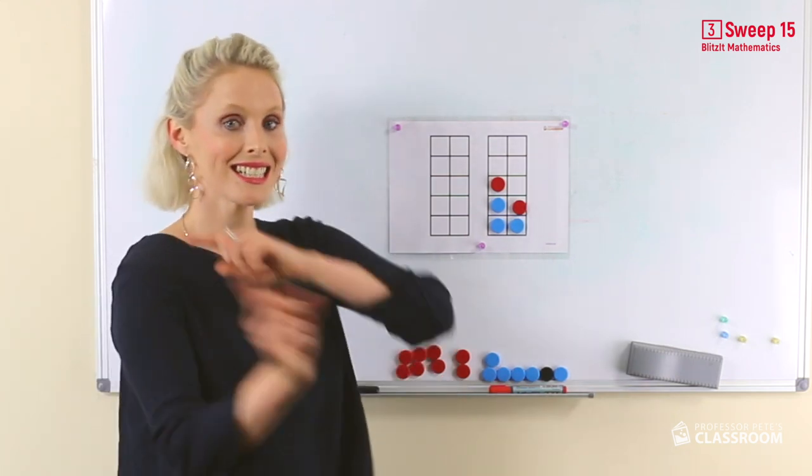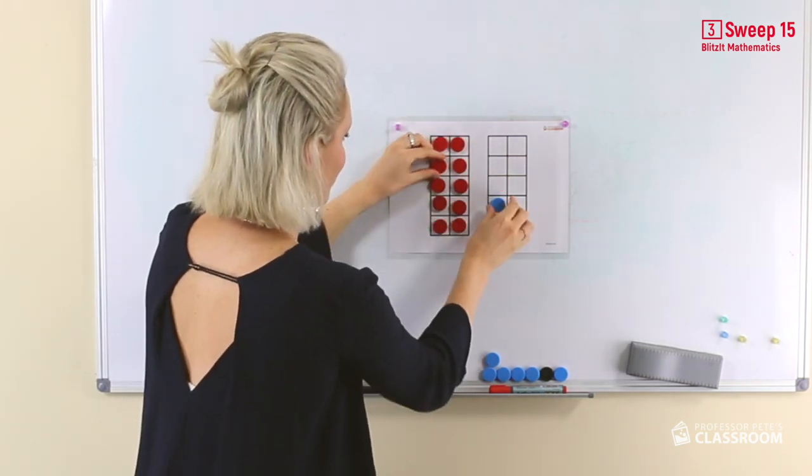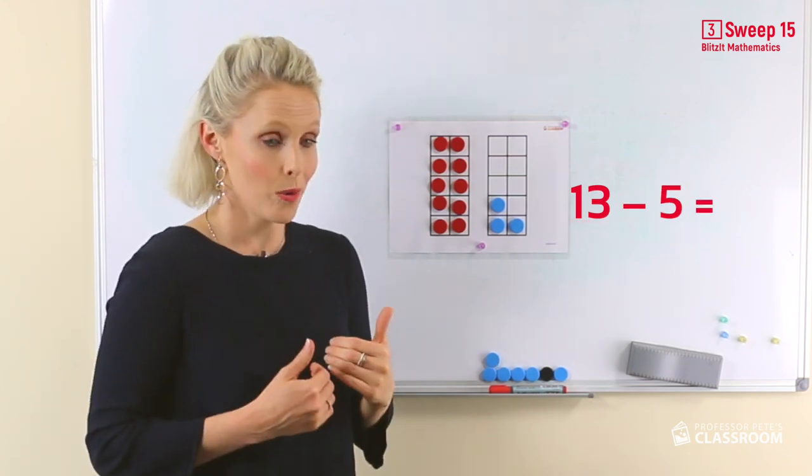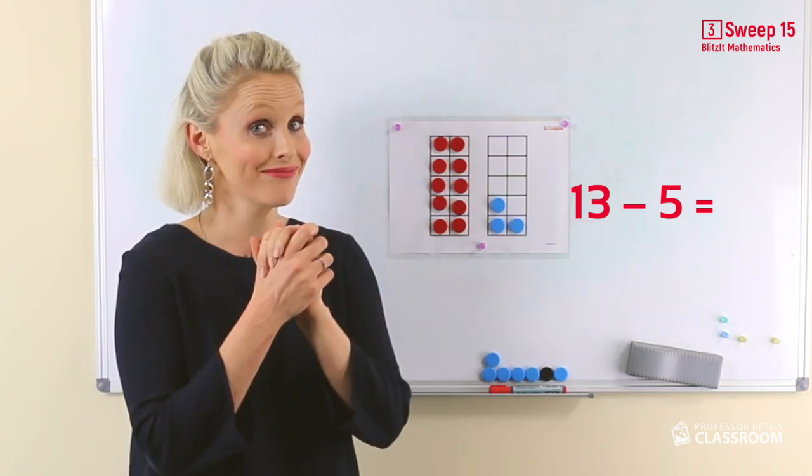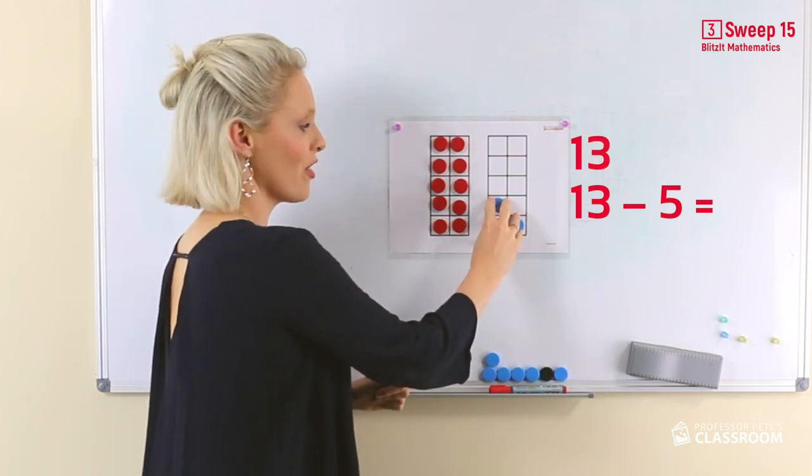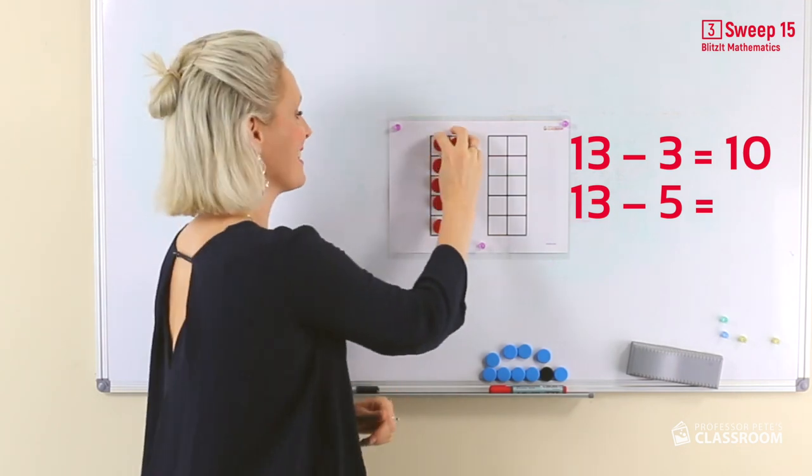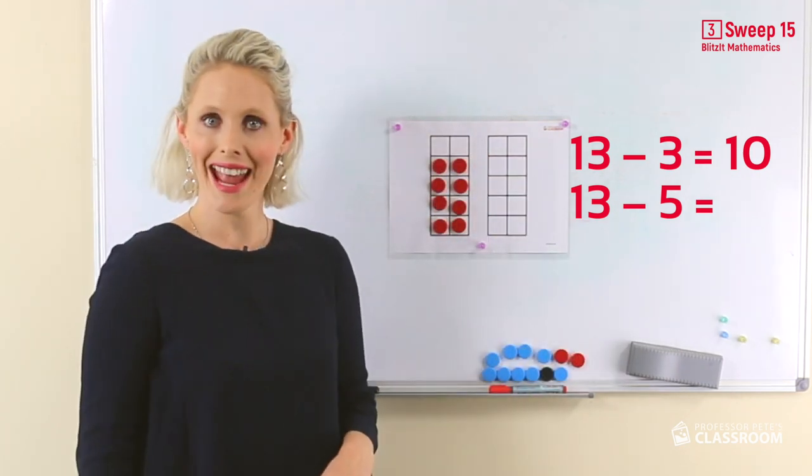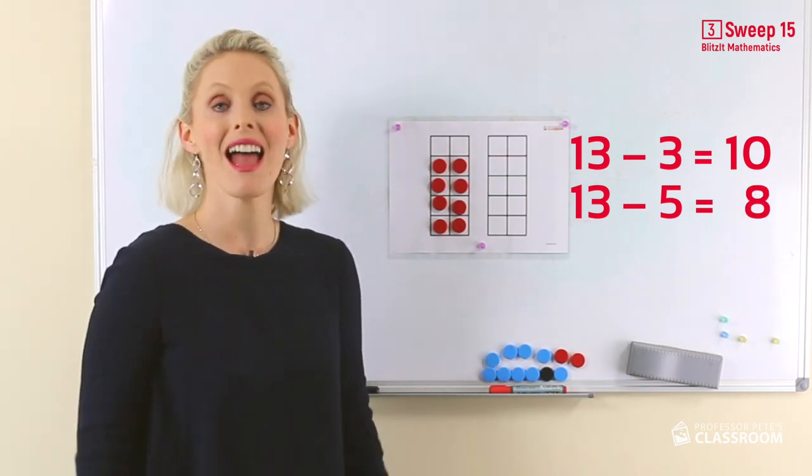Now let's look at the turnaround. What is 13 take away 5? Well we should know that 13, 8, and 5 are connected. So let's have a look. Here we have 3 and then remember two less. 4, 5. The answer is 8. 13 take away 5 equals 8.